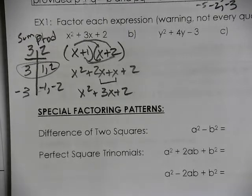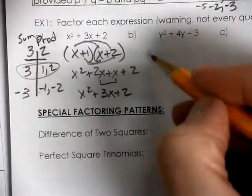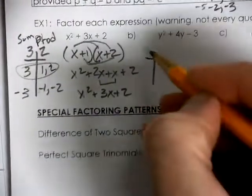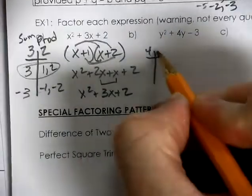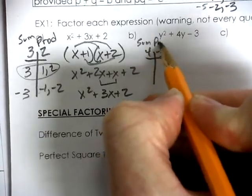So now go ahead, pause the video, check out to see what your next trinomial is going to be. So we can look at this one. We can see that we need a 4 to be added together. We need a negative 3 to be multiplied together. So we're looking for our sum and product.